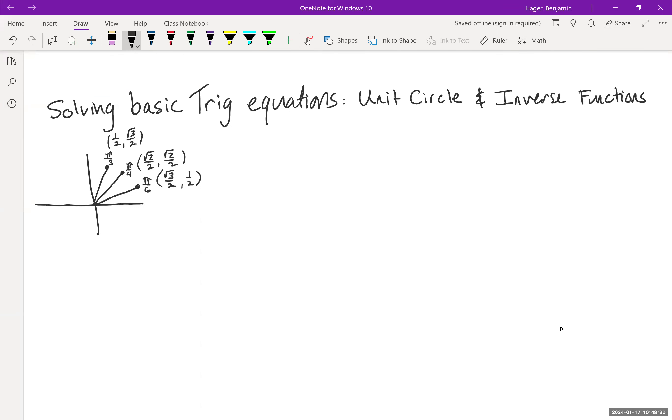I've added quadrant one of the unit circle here. I want to look at some basic equations using both the unit circle and inverse trig functions, because we want to make sure we can do both. When you're solving a trig equation, there's actually a couple different ways you can write your answer. Usually the directions might say find all real solutions, find the general solution, or find all solutions in some window, like from 0 to 360 degrees or 0 to 2π.